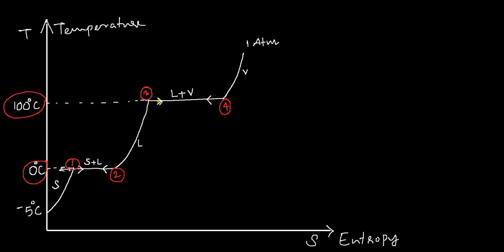This region is where H2O can coexist as liquid and vapor — at 100°C and 1 atmospheric pressure, H2O can coexist as liquid and vapor. At point 4, you have saturated vapor. All of the water has now been transferred to the vapor state of matter, and you have saturated vapor here.